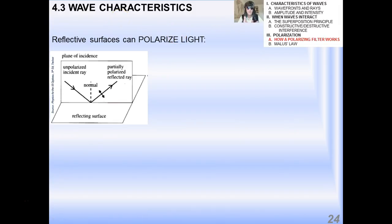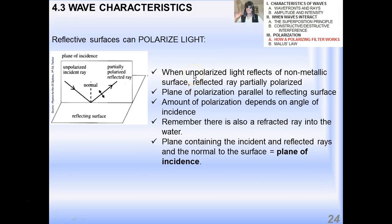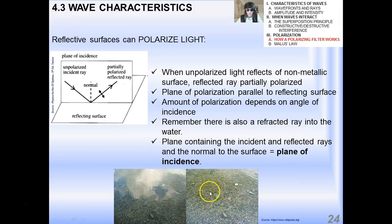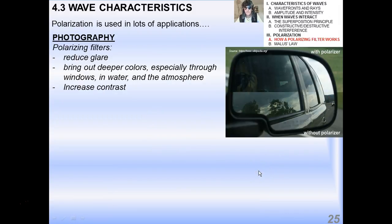Reflective surfaces, as we just saw before with water and the hood of the car, can polarize light. When unpolarized light reflects on a non-metallic surface, the reflected ray is partially polarized. Remember, that surface of the car hood is metal, but it's coated with paint, and it's the paint that reflects the light, not the metal underneath it. The plane of polarization is parallel to the reflecting surface. The amount of polarization depends on the angle of incidence. There's also a refracted ray into the water, in the case of water, and the plane containing the incident and the reflected rays and the normal of the surface is called the plane of incidence. A polarizing filter will filter out all of the sunlight from these clouds that's reflected off the water, and you'll get a nice crisp image under the water. It's kind of like magic, but it's not really magic. It's physics.